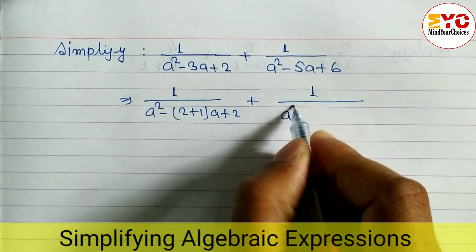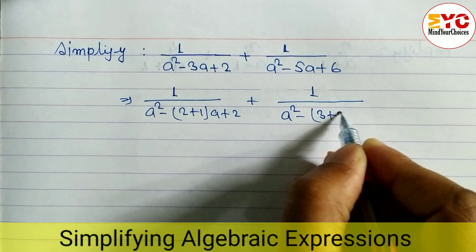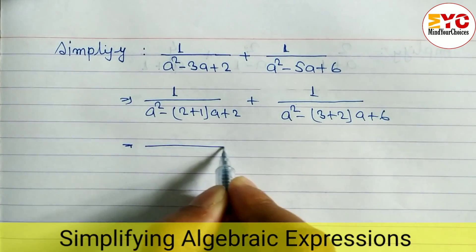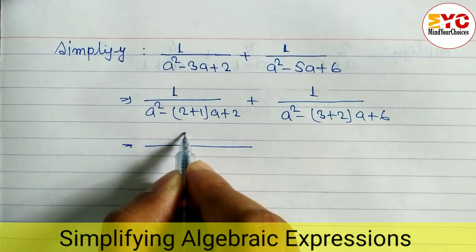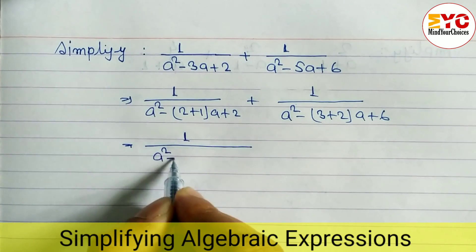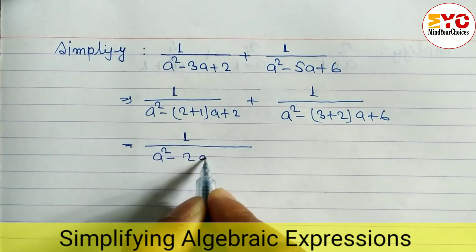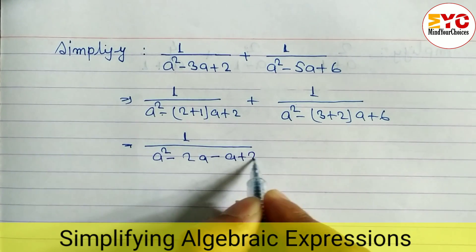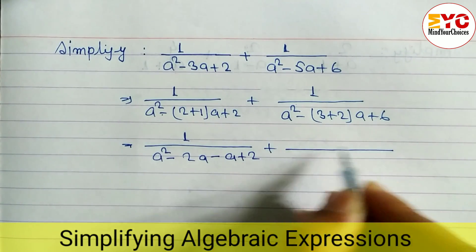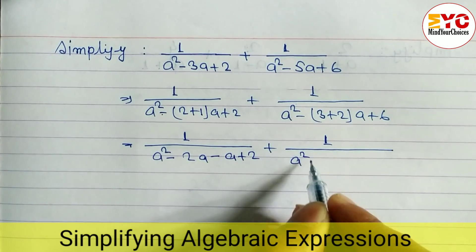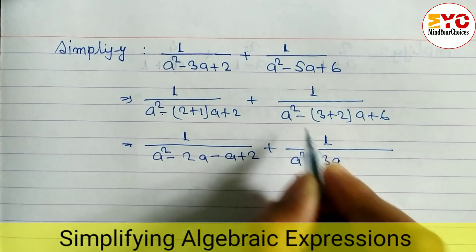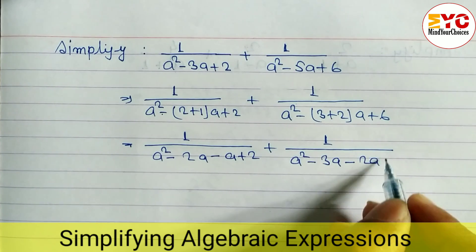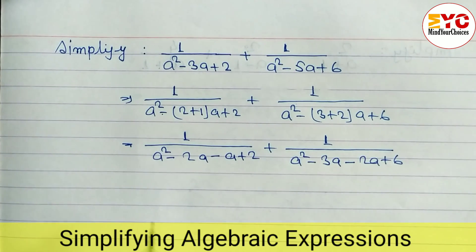So we write a²-3a-2a+6. Now we open the brackets: for the first expression, a²-2a, and minus 1 times a gives a, plus 2. For the second expression similarly: a²-3a, minus 2 times a gives 2a, plus 6.